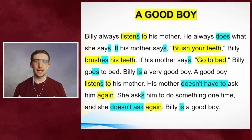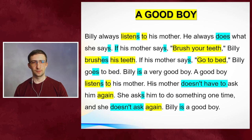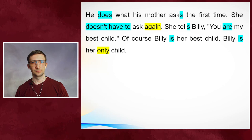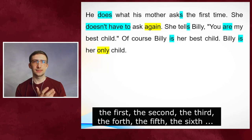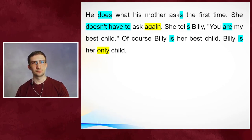Also note 'doesn't ask' — he/she/it doesn't, then the infinitive: ask. Billy is a good boy. Repeat. He does what his mother asks the first time. Repeat. Note the ending S on 'asks.' And 'the first time' — it's not just 'one': we have the first, the second, the third, the fourth, the fifth, the sixth, etc.